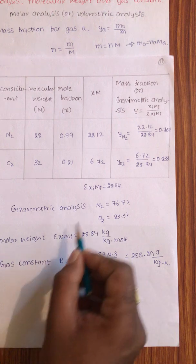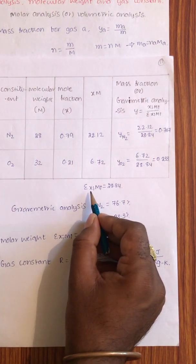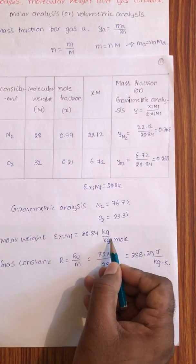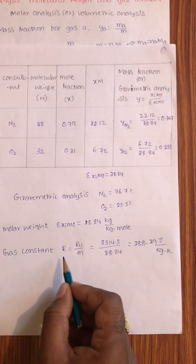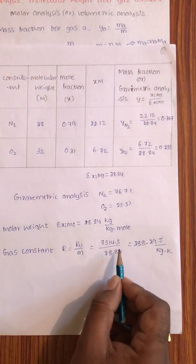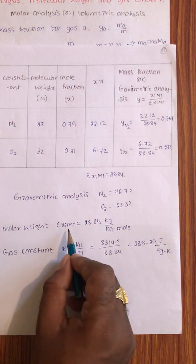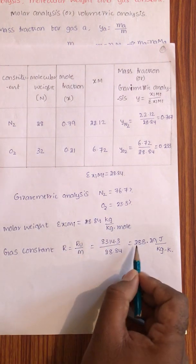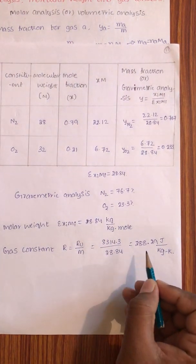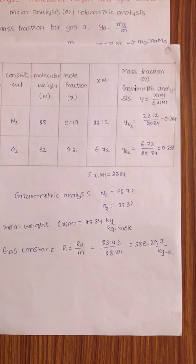Now molecular weight of the mixture. M is equal to series of Xi Mi, which is 28.84. Gas constant R is equal to Ru by M. Ru is 8314, M is 28.84, so R is 288.29 joules per kilogram Kelvin.